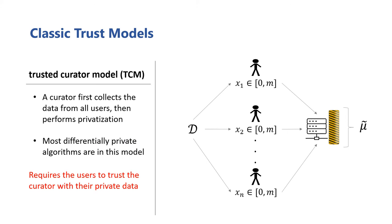The first model we'll discuss is the trusted curator model. Here, users submit their unprivatized data directly to the curator. The curator then performs any computations at once on the data, taking on the responsibility to ensure that these computations satisfy differential privacy. Due to the centralization of users' data, mechanisms designed for this model tend to have higher utility, since the curator can very precisely incorporate the necessary randomness into the computations.